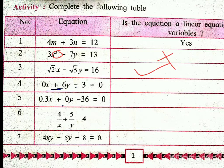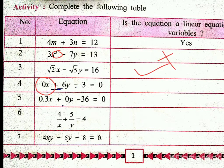Two variables are there, but the coefficient of x is 0. So x term becomes 0, meaning 0 multiplied by something is 0, so the x term vanishes. The equation becomes 6y minus 3 is equal to 0. This is a linear equation, but it is not a linear equation in two variables — it is only a one variable equation.